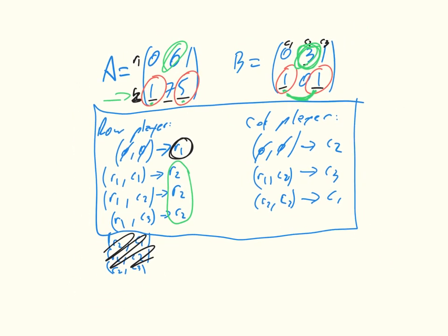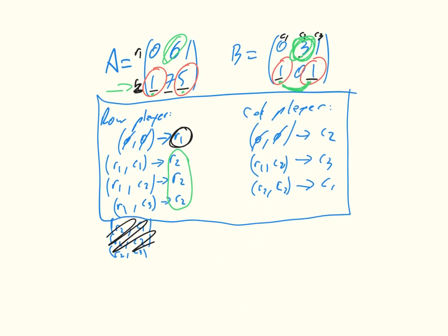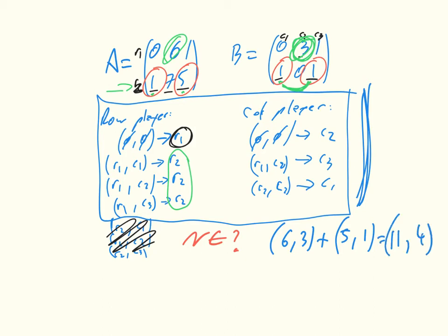And so we can verify, is this a Nash equilibrium? The utility of both players following this strategy is 6, 3 in the first round and 5, 1 in the second round. So 11, 4 overall. If both players follow the strategy, then we'll get 11, 4.